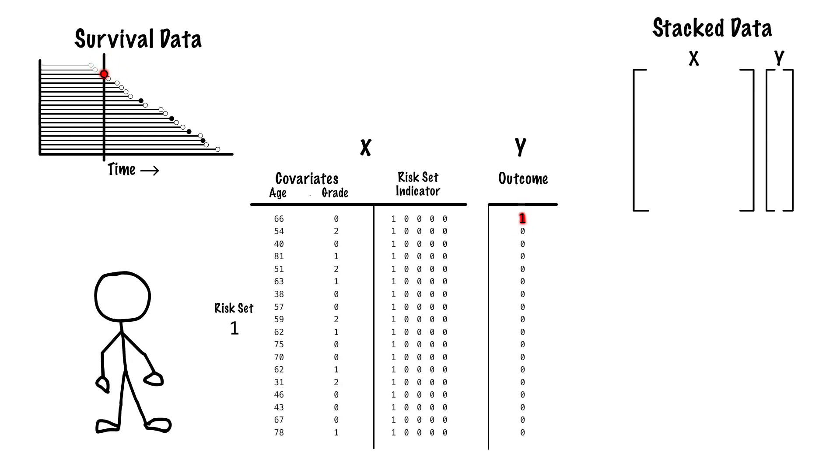For the first observed event time, we construct a risk-set data matrix and outcome vector. The data matrix contains the covariates for each subject in the data at this event time, and a risk-set indicator telling us that we're looking at the first risk-set.